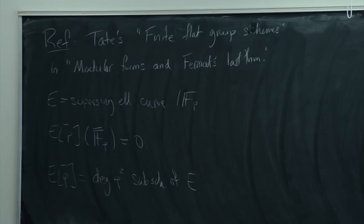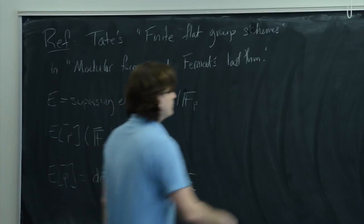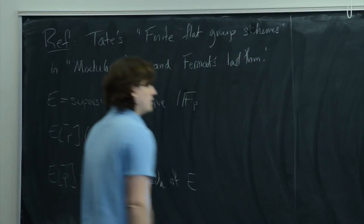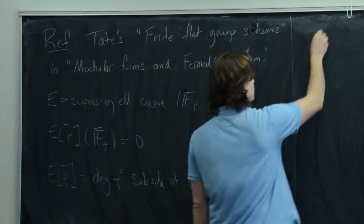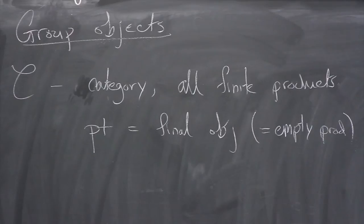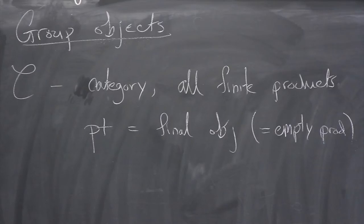We're going to study all group schemes. Before we even study group schemes, I want to talk about the categorical generalities, which is group objects in categories. So let's start with C being a category, and for the moment let me assume that it has all finite products. All finite products means, in particular, the empty product, which is the final object, and I'll call that 'pt'.